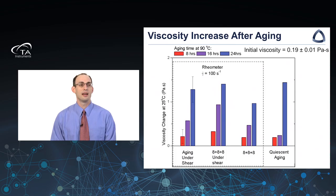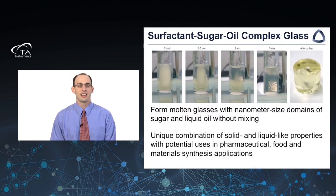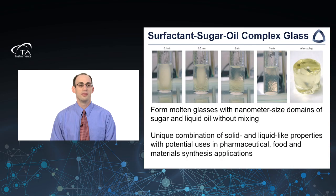The second volatility example is what I call a sugar glass — mixtures of surfactant, sugar, and oil. These complex glasses form very small nanometer-scale domains between sugar and liquid oil, specifically limonene, without mixing. The photographs from the paper show the dissolution of sugar and surfactant into the oil phase over a few minutes, producing the product glass. These sugar glasses are quite interesting with potential applications in food and pharmaceuticals.